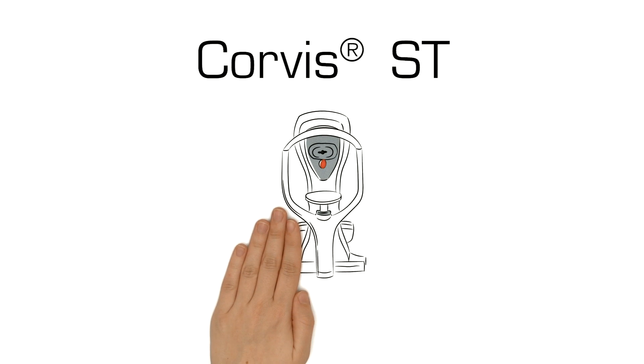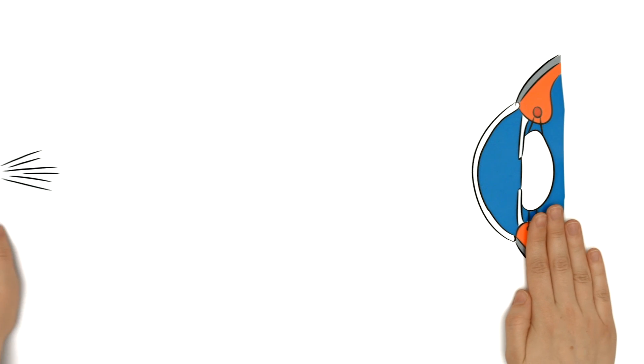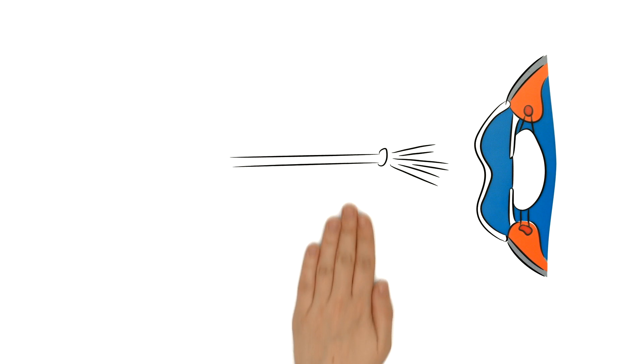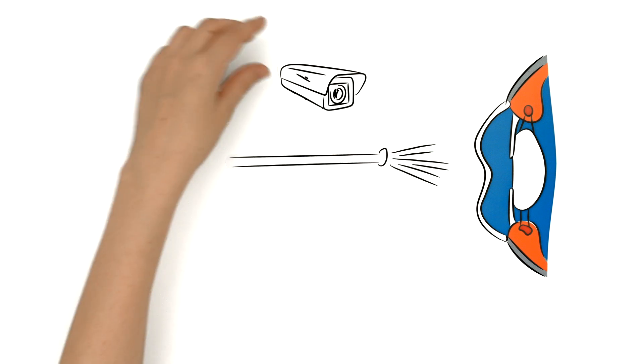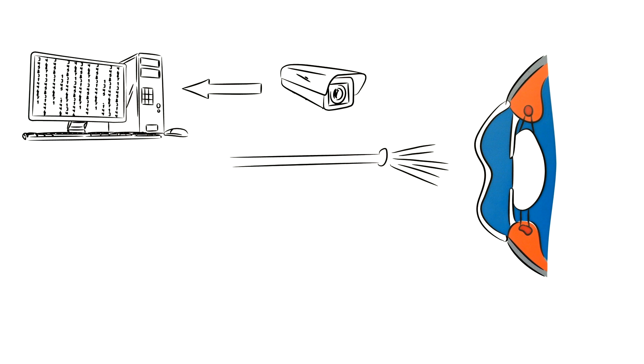Corvus ST from Oculus makes this possible for the first time ever. Pressure is applied to the cornea via an air puff and a high-speed camera records the change. The Corvus software uses this to calculate a stiffness parameter of the cornea.